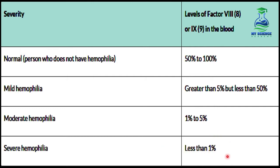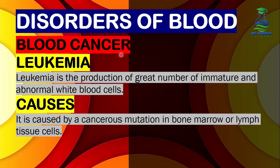Severe hemophilia is very rare because hemophilia itself is a rare disorder. Now let's look at the second type of blood disorder — leukemia. Leukemia is the production of a great number of immature and abnormal white blood cells.